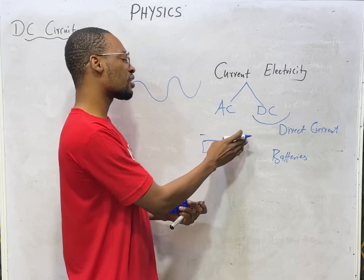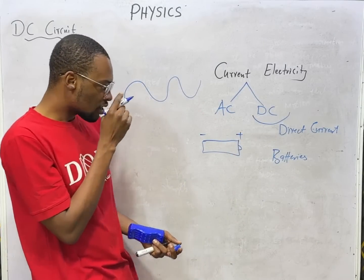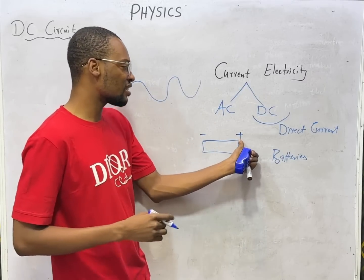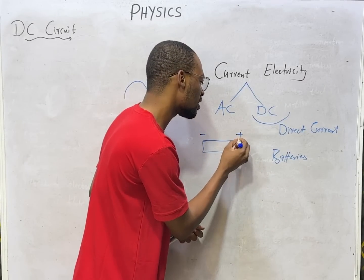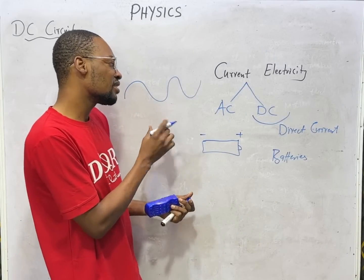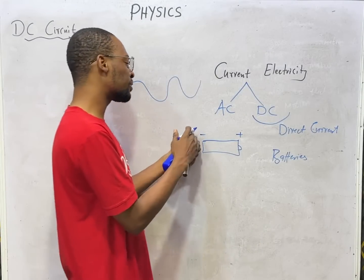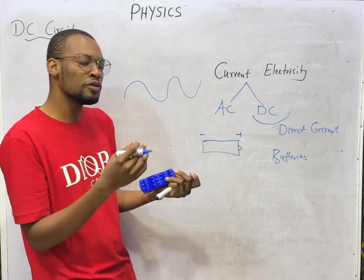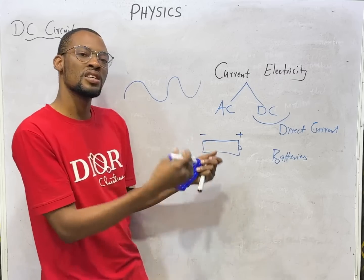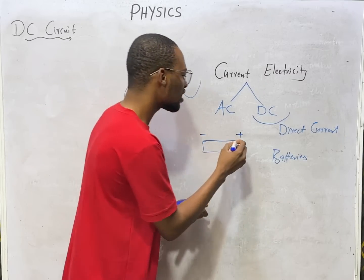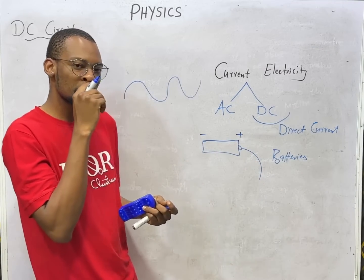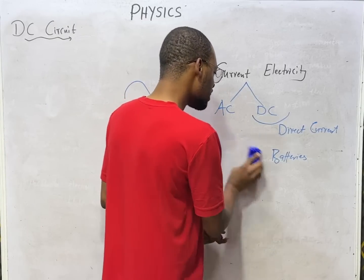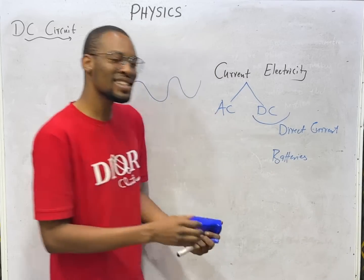Currents generally flow from positive to negative. The positive side is referred to as the high potential side, and the negative side as the low potential side. The potential difference is the difference in potential between the two terminals. For current to flow, or for there to be voltage, there must be a difference in potential. Electrons flow in the opposite direction of conventional current.